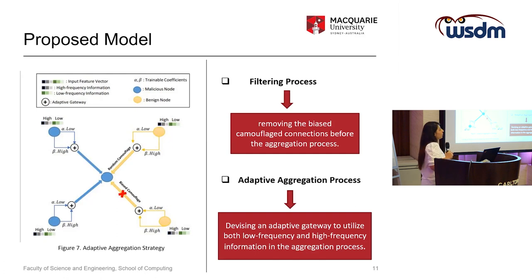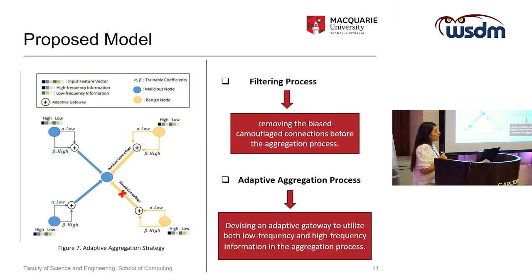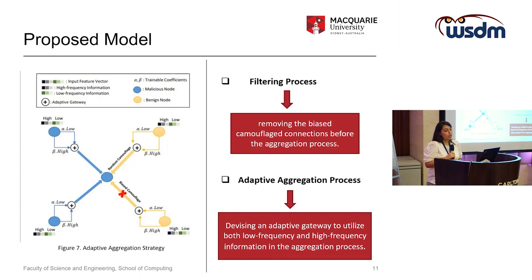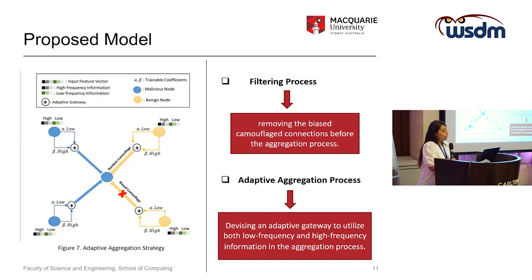The second part of our model is the adaptive aggregation process. We utilize an adaptive gateway to leverage both low-frequency and high-frequency information. We train two coefficients, alpha and beta, corresponding to low-frequency and high-frequency information respectively. There are two things to address: how to extract low-frequency and high-frequency information from the feature vector, and how to decide which types of frequency dominate in the aggregation process. We train alpha and beta to determine which frequencies are dominant in the aggregation process for each neighborhood.